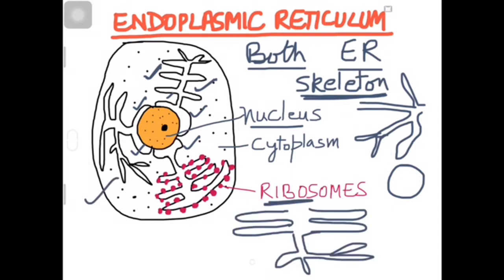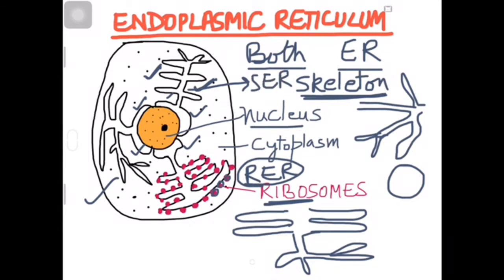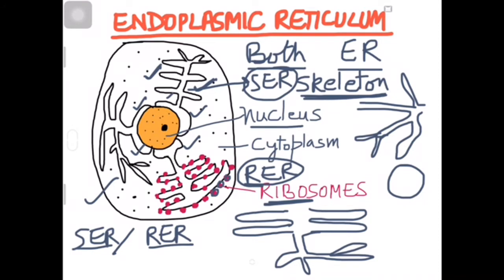This is RER — Rough Endoplasmic Reticulum. On its surface you can see ribosomes. This is Smooth Endoplasmic Reticulum (SER). Two types may be found in the cell: SER and RER. SER का काम है lipid production — वसा आदि बनाता है।